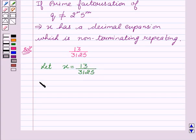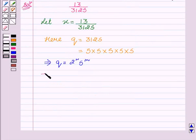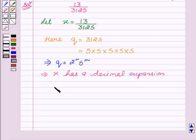Here we see that q is equal to 3125, and factors of 3125 is 5 into 5 into 5 into 5 into 5. This implies q is of the form 2 to the power n, 5 to the power m. This implies x has a decimal expansion which terminates.